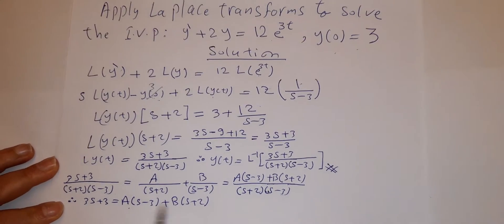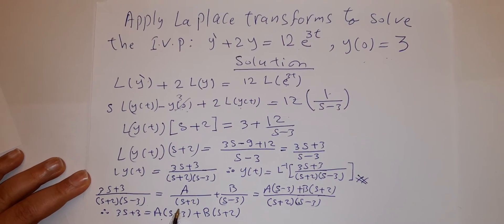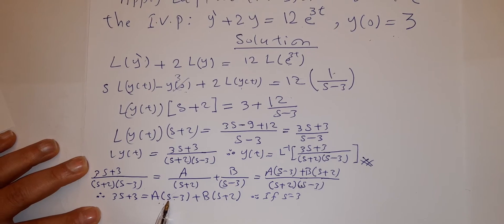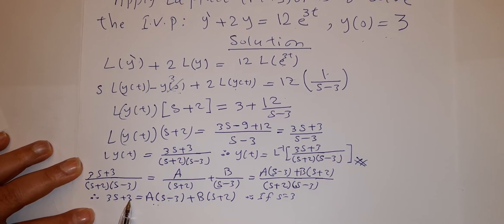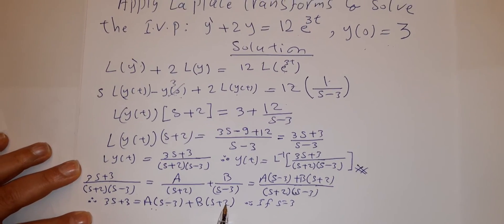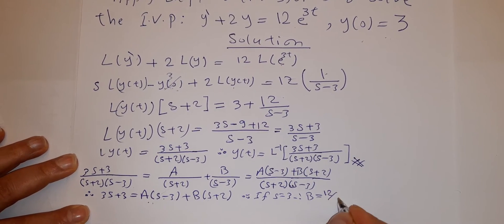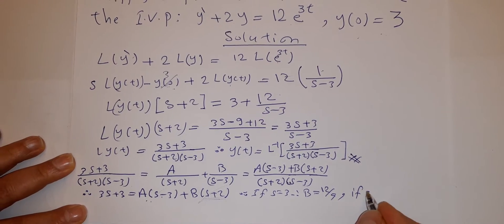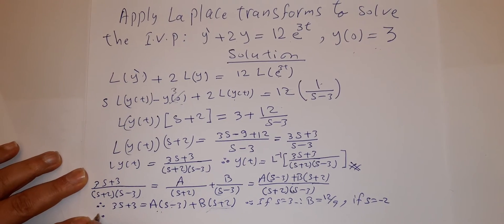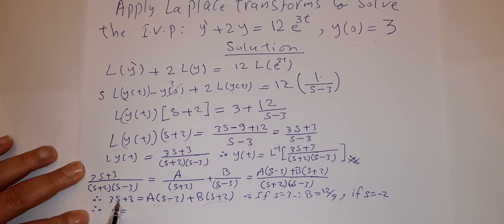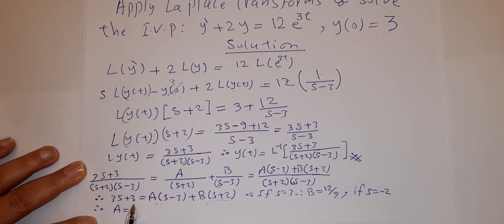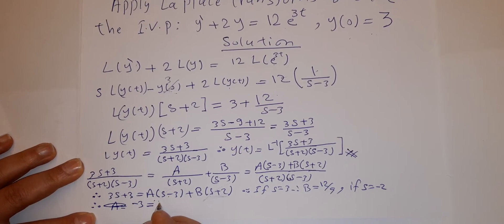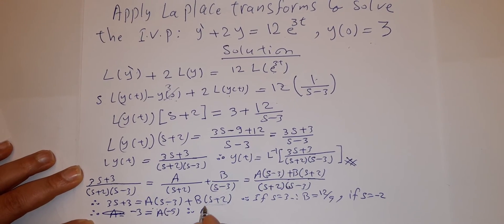We use convenient values of s to find A and B. Setting s = 3 eliminates the A term: 3(3) + 3 = 12 = B(3 + 2) = 5B, so B = 12/5. Setting s = −2 eliminates the B term: 3(−2) + 3 = −3 = A(−2 − 3) = −5A, so A = 3/5.